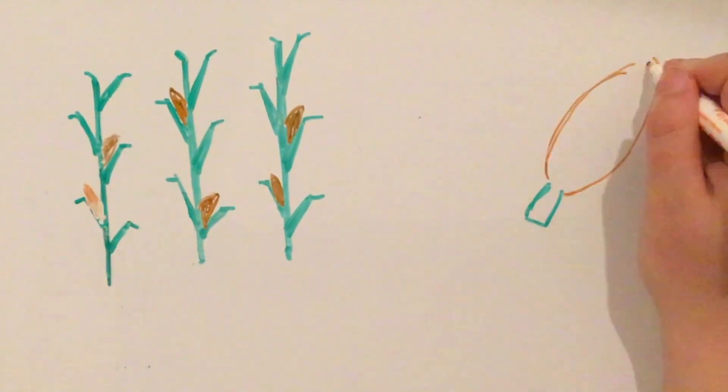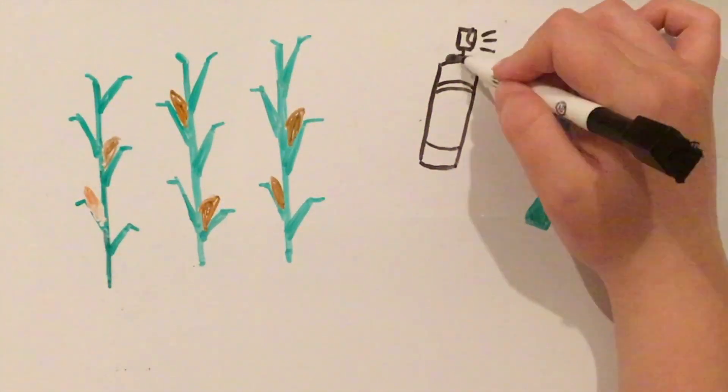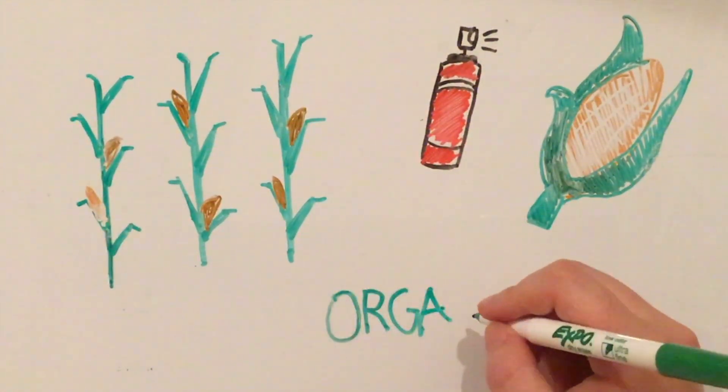Some farmers don't spray their crops while they're being grown, but after they're cut, they spray the crops with chemicals to keep them fresh. These crops are considered to be organically grown.